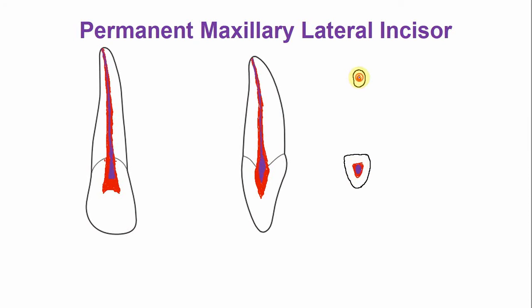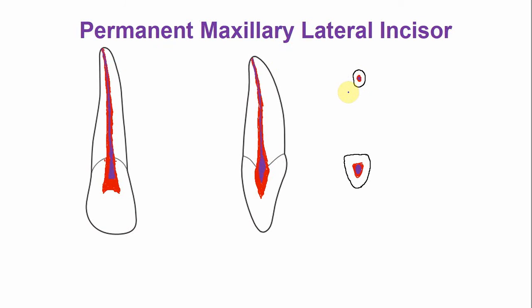In the apical portion, the canal becomes more rounded and smaller. This is all about the permanent maxillary lateral incisor.